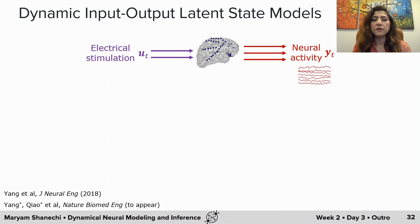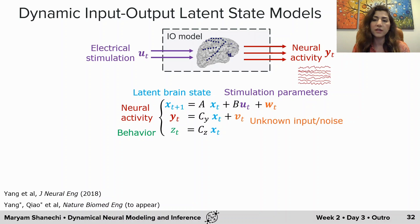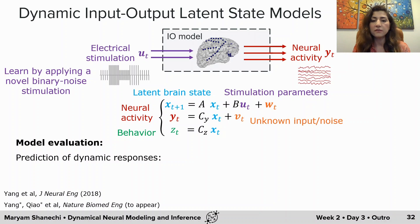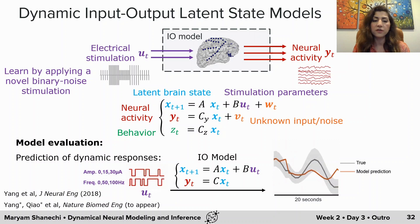All of the latent state space models discussed so far did not incorporate the effect of an external input. But if we want to manipulate or control brain activity, it's important to describe how external inputs such as electrical or optogenetic stimulation drive neural dynamics. We have extended this latent state space model to incorporate the effect of electrical stimulation input, trained these models using novel stochastic binary noise stimulation patterns, and shown that these models can predict neural dynamics in response to stimulation — the input-driven dynamics.